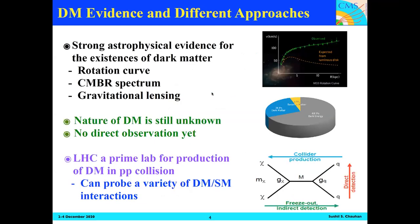On slide four: we have very strong astrophysical evidence for dark matter — the rotation curve, the CMB spectrum, gravitational lensing, and results from Planck and other experiments. But we still don't know the nature of the dark matter candidate and unfortunately have no direct observation yet. The LHC is a big machine and can be a prime lab for production of dark matter in pp collisions, assuming dark matter particles have particle origin.